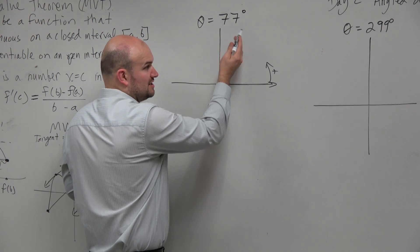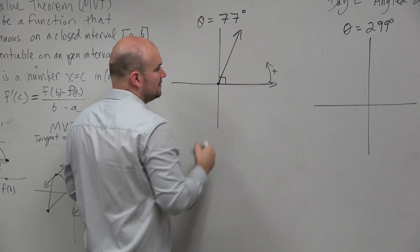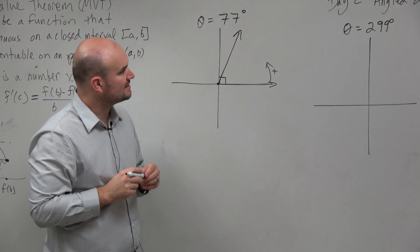So therefore, 77 degrees is going to be, obviously, like halfway is 45. 77 then is going to be somewhere there, roughly. We're not trying and it doesn't need to be anything exact.